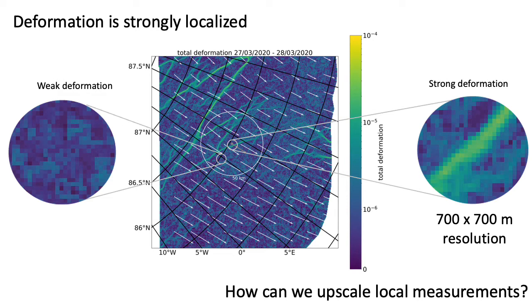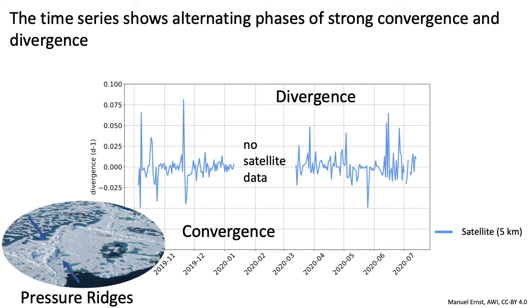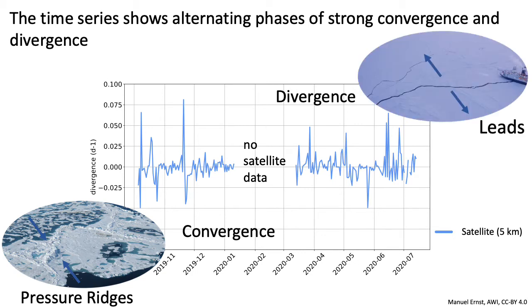My aim now is to show you that the local deformation in a radius of about 5 km was representative for the deformation in the wider region. To do this we will study this time series of divergence from the direct vicinity of the MOSAiC floe. All negative numbers refer to convergence — the formation of pressure ridges — while the positive ones describe divergent events when leads have formed. In the middle of the time series there is a gap because the MOSAiC floe was too far north to be seen by satellites.